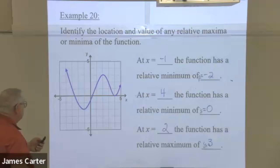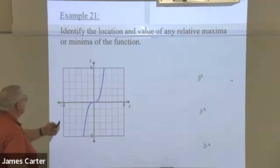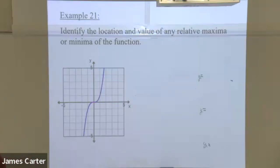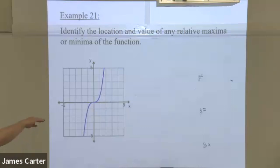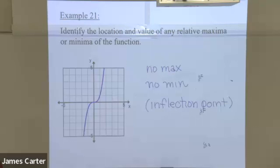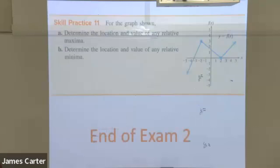Is there a maxima or minima in this one? There is a turning point — a continuous turning point — but it's not actually a change of direction. You kind of level out and then keep on going; it's never perfectly level. In this case there's no maximum and no minimum. It's called an inflection point, if you want to put a technical term on it.